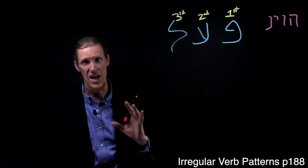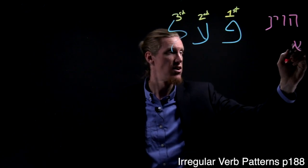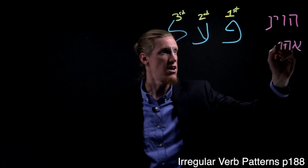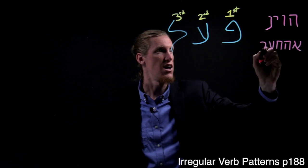And there are five guttural letters. They are Aleph, Hey, Hate, Ain, and Resh.